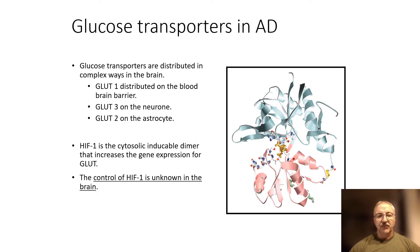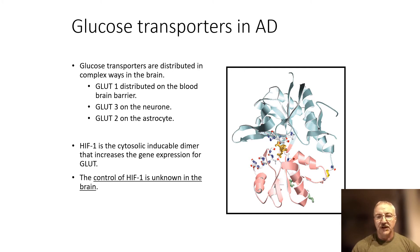When we inject FDG into a patient, what we're really imaging is the distribution of glucose transporters. We see massive upregulation in many carcinomas, and tumors where we see very little FDG uptake don't have this upregulation of glucose transporters. In the brain, glucose transporter 1 is distributed at the blood-brain barrier, glucose transporter 3 on the neuron, and glucose transporter 2 on the astrocyte.